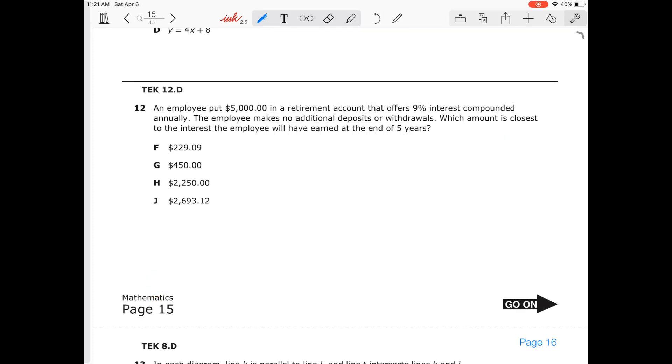Number 12. An employee puts $5,000 in a retirement account that offers 9% interest compounded annually. That means we're going to look at our formula chart. And we're going to write our formula for compound interest, which is A is equal to P times (1 plus r) to the t power. The amount is closest. Which amount? Now, if the employee makes no additional deposits or withdrawal, which amount is closest to the interest the employee will earn at the end of five years. So our P is going to be equal to 5,000. Our r is going to be the 9% in decimal form. So that's going to be 0.09. And then our t is going to be the time in years. So that's 5. And we're going to plug this in. So A is equal to 5,000 times 1.09 to the fifth power.